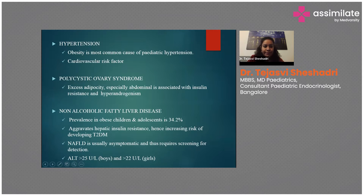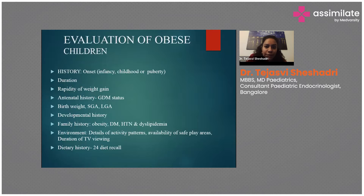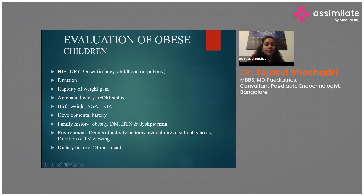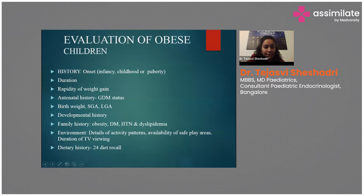When evaluating an obese child, you must take a thorough history. Based on onset, if it is during infancy it is more likely a genetic cause; if during childhood or puberty it could be either. Find out the duration — very rapid weight gain favors pathological causes. Antenatal history matters: antenatal risk factors, IUGR, or SGA babies can result in obesity. Developmental delay favors genetic causes, as does a family history of obesity or metabolic syndrome.